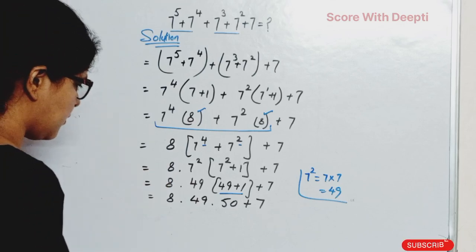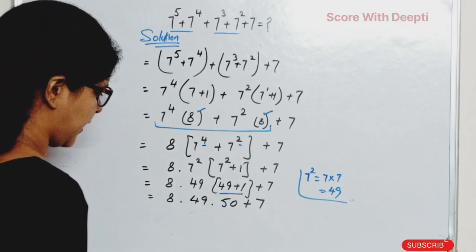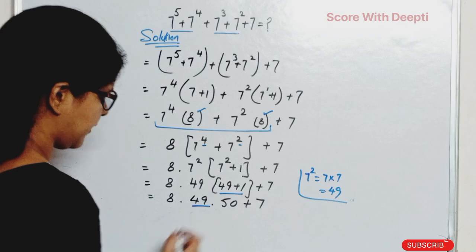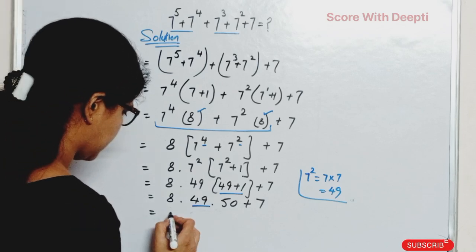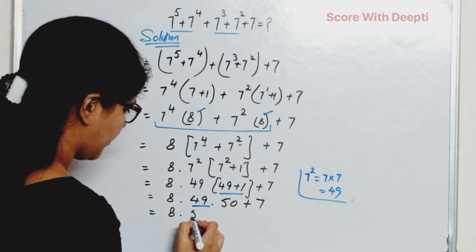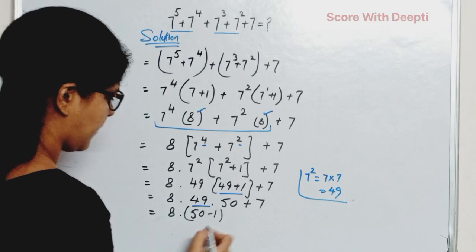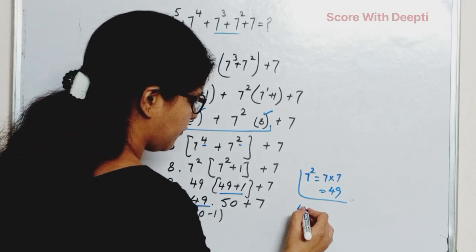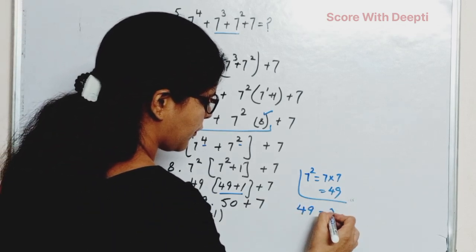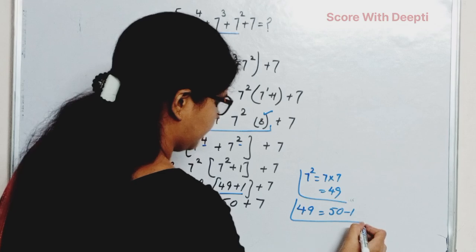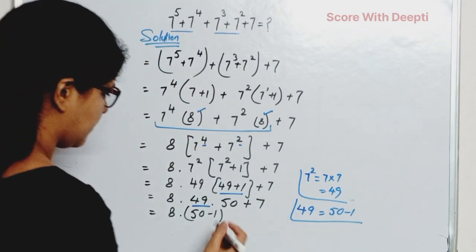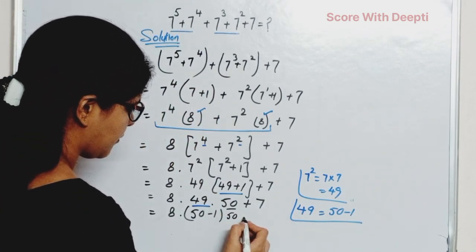Next, again, to simplify this in easy way, in place of 49, we can write 8 * (50 - 1). We can write 49 = 50 - 1. Next, 50 as it is plus 7.